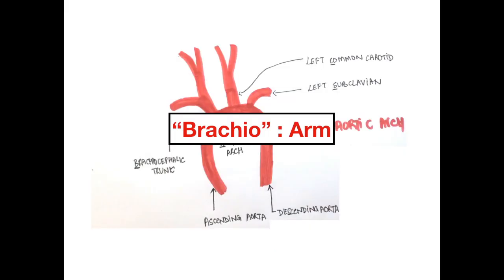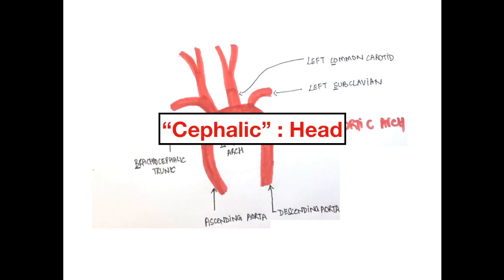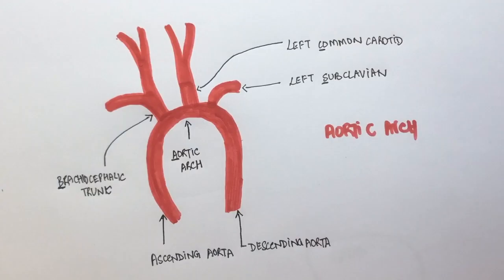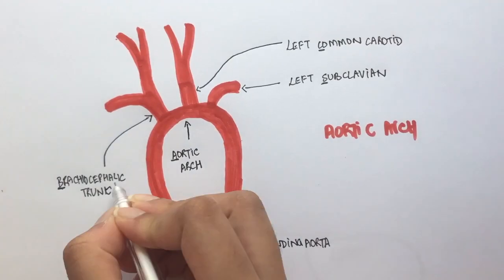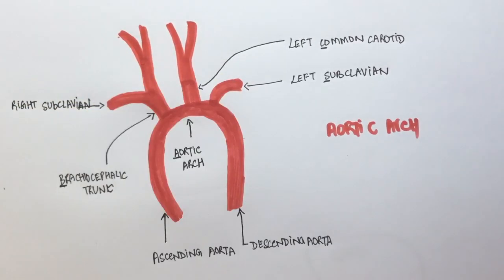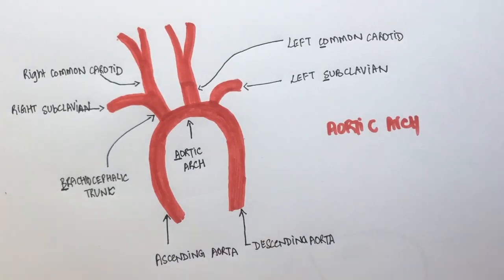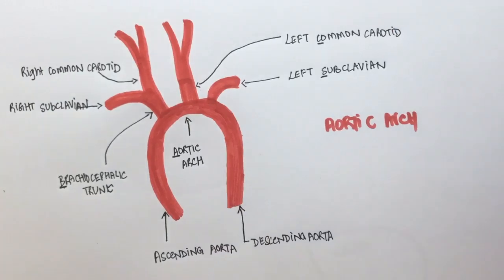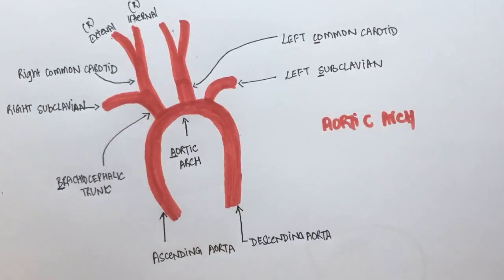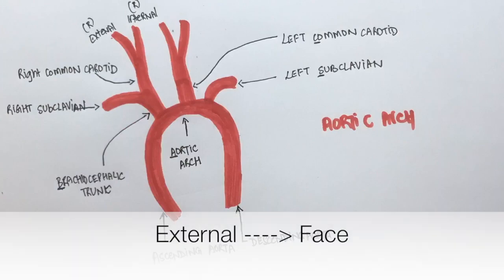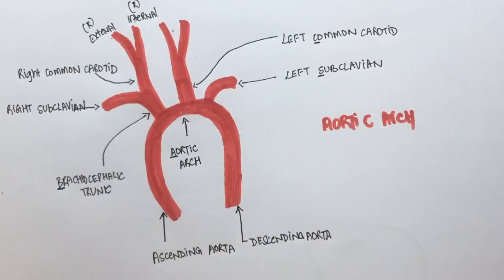In anatomy, whenever you hear the word brachio, it should remind you of the arm. Cephalic refers to the head. So the brachiocephalic trunk gives rise to the right subclavian artery, which goes to the arm, and the right common carotid artery, which goes to the head. The common carotid artery splits into the external and internal carotid arteries. The external supplies the face and internal supplies the brain. It's the same on the left side as well.